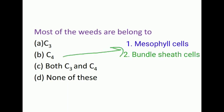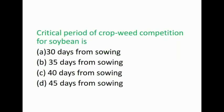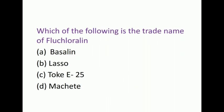Next question: Critical period of crop-weed competition for soybean is? The options are 30 days after sowing, 35, 40, 45. The correct answer is 45 days after sowing.